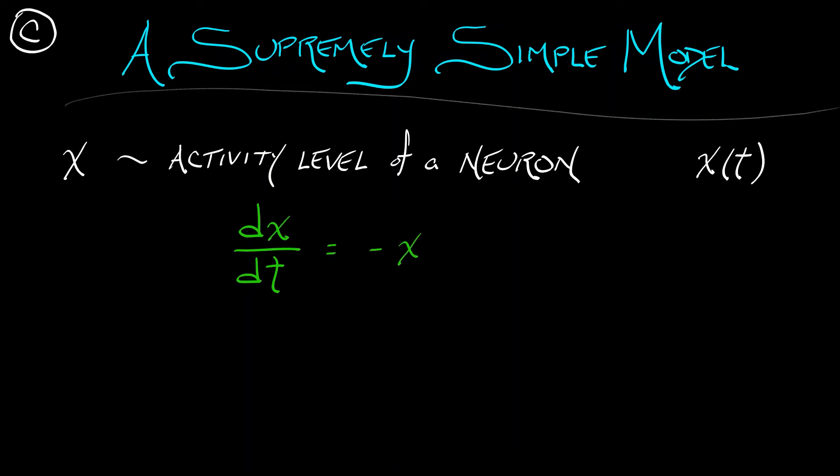Consider the following: we have one variable, x, that corresponds to the activity level of a neuron. This is going to be a continuous time system, so x depends on t. And here is the simple differential equation: dx/dt equals minus x plus theta. Theta is going to be some positive constant called the activation strength of the system.